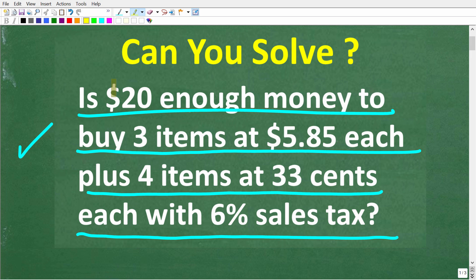All right, so one more time. The question is, is $20 enough money to buy three items at $5.85 each plus four items at $0.33 each with 6% sales tax?